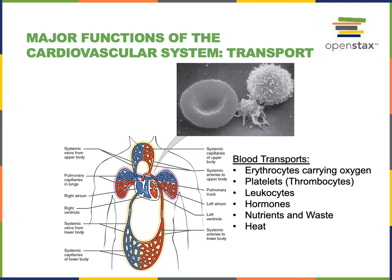The blood transports nutrients from the intestines as we absorb nutrients from our food. Nutrients are transported in the blood around the body to deliver those nutrients to cells that can use them.